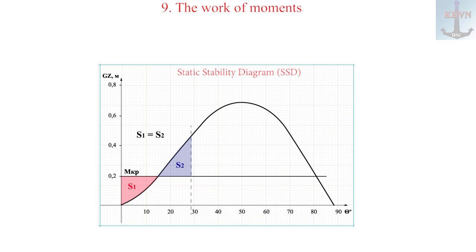There are two triangles left, red and blue. If the areas of these triangles are equal, then the work of these moments is equal. This triangle equality rule should be understood and memorized. The vessel under a dynamic gust of wind will list at an angle cut off by the vertical line. Here the dynamic healing angle from the gust will reach 29 degrees.